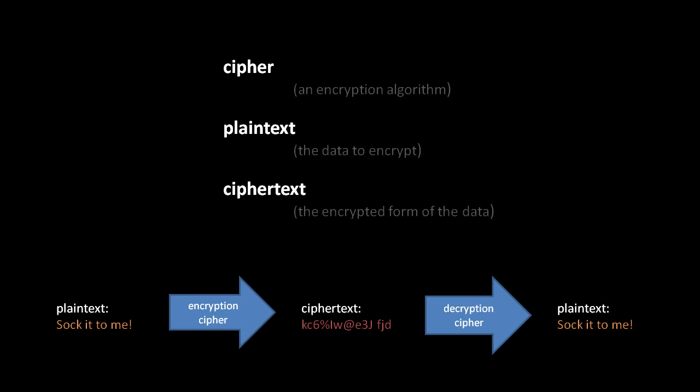And do understand that the data to encrypt can be any kind of data, it can just be any arbitrary sequence of bits, it doesn't have to be text. Plaintext and ciphertext are just the traditional terms, likely stemming from the fact that encryption historically started out being all about securely transmitting text.